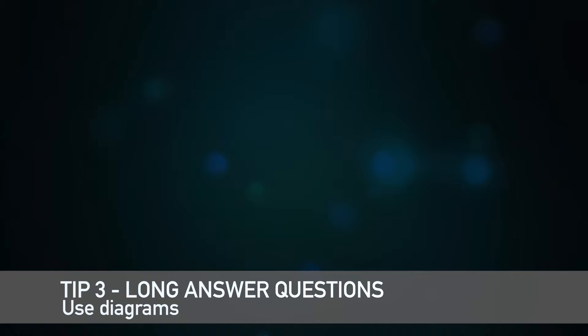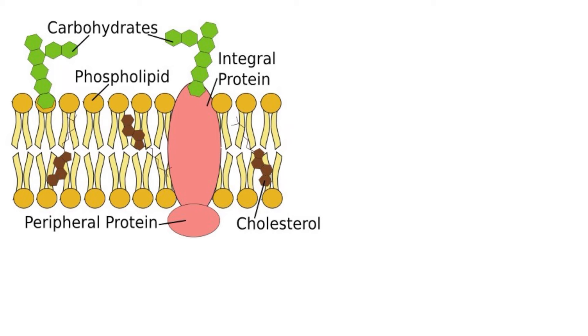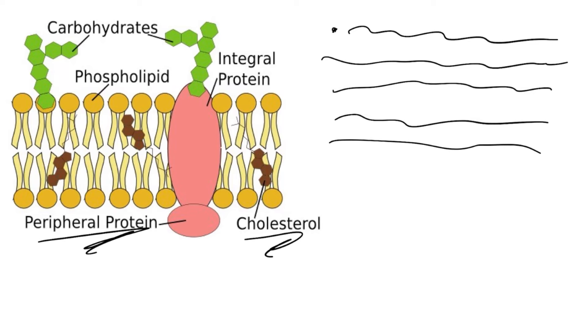My third tip is about the long answer questions of 4 marks, 6 marks, and 8 marks, which is to use diagrams. When there are large concepts or processes such as the Krebs cycle that you need to memorize, there's no point in trying to memorize each individual fact without some sort of aid. I would suggest drawing something out when you are answering these questions to help you write the paragraph. You might not even get any marks for drawing the diagram, but having it there helps your memory and helps you write in a very structured way, as well as getting those two bonus English marks in the long answer questions.